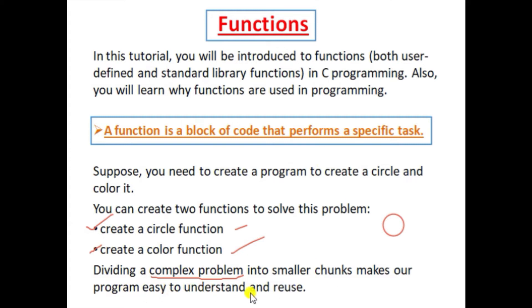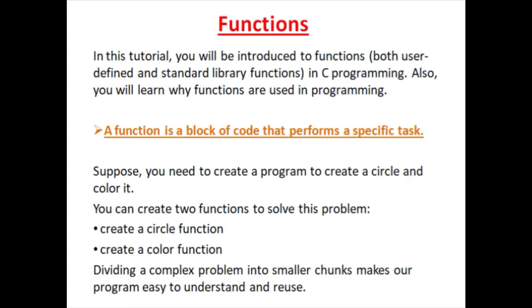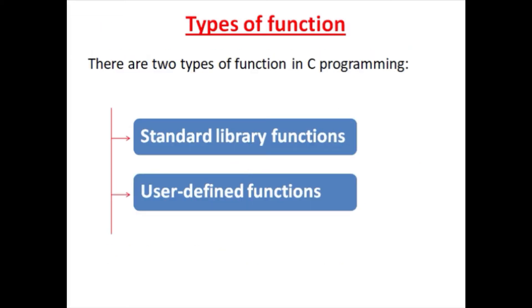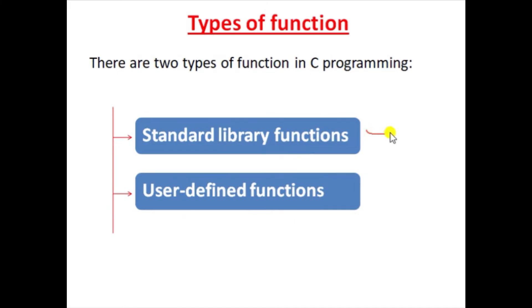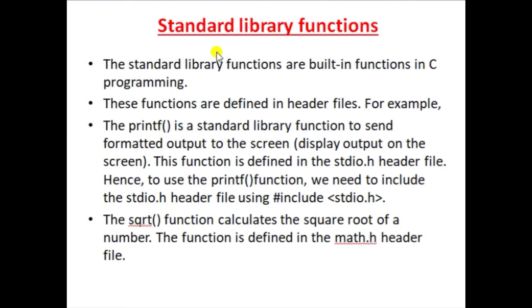We use functions basically to reduce code complexity and to make the code easier to compile. There are two types of functions in C: standard library functions and user-defined functions.